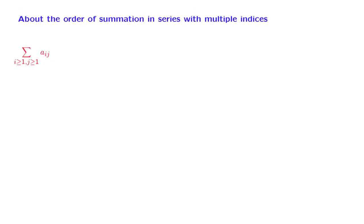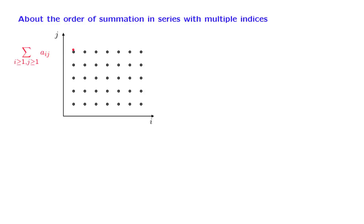We now continue our discussion of infinite series. Sometimes we have to deal with series where the terms being added are indexed by multiple indices, as in this example here, where given numbers a_ij and i ranges over all the positive integers, j also ranges over all the positive integers. We can think of it as a two-dimensional grid that corresponds to all the pairs ij, and each one of those points corresponds to one of the terms that we want to add.